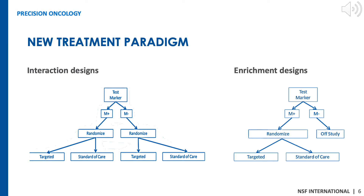Under interaction designs, both marker-positive and marker-negative patients are enrolled. Marker status is used as a stratification factor, and patients are randomized to treatment groups within each marker-based subgroup. The INTEREST or MARVEL trials for non-small cell lung cancer are examples of interaction designs, wherein both marker-positive and marker-negative patients are enrolled. Under enrichment designs, only patients who are positive for a marker are enrolled. The N9831 trastuzumab study in HER2-positive breast cancer and the ToGA trial in HER2-positive stomach cancer are examples of enrichment designs.